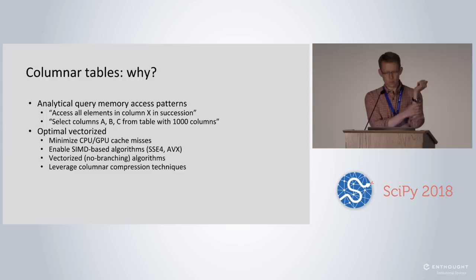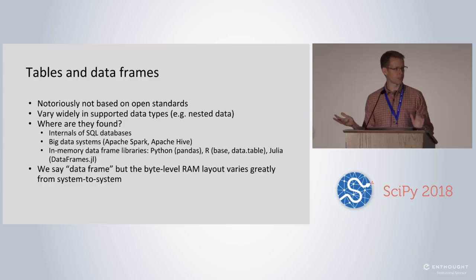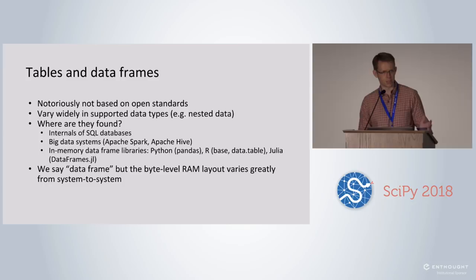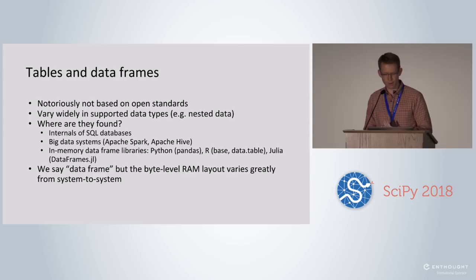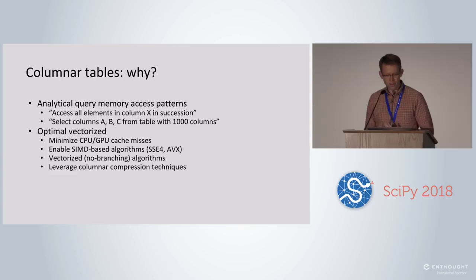Why do we care about column-oriented data? Tabular data and data frames aren't all column-oriented. A lot of SQL databases have row-oriented tables — Postgres SQL has a row-oriented format, and Apache Impala also has a row-oriented table format. But there are a lot of benefits, with trade-offs, to column-oriented tables. Pandas tries to be column-oriented, though depending on what the NumPy arrays look like when you give them to Pandas, they may or may not actually be column-oriented.